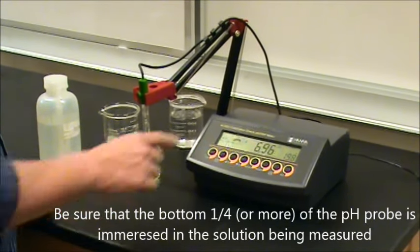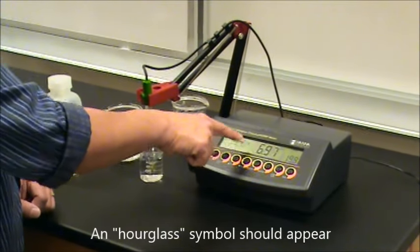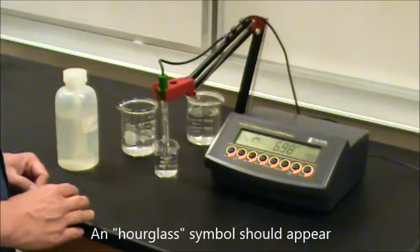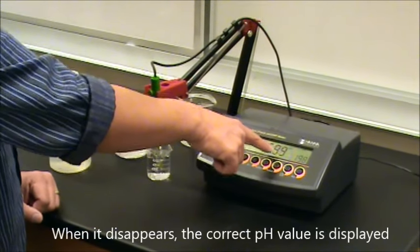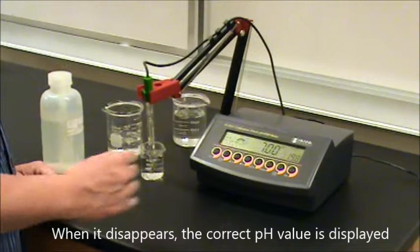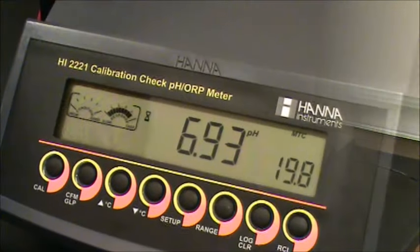There will be a little hourglass which will show that it's trying to stabilize. Once the hourglass disappears, these numbers will not fluctuate much more and you can go ahead and read that as your pH.